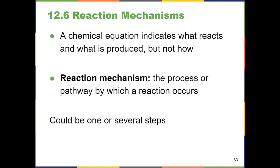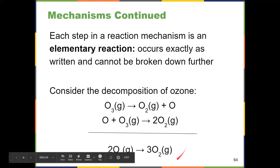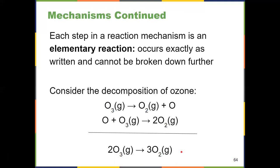Looking at the reaction mechanism does that — we see the process, exactly how a reaction occurs, what's moving where. That could happen in one step or several steps. Looking at an example on slide 64, we have an overall reaction of the conversion of ozone to oxygen, O3 going to O2. There are six oxygen atoms on each side — it's a balanced equation there on the bottom.